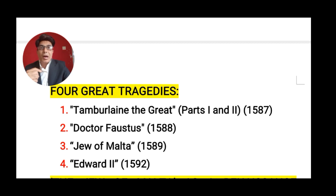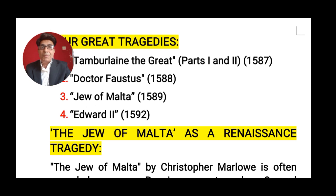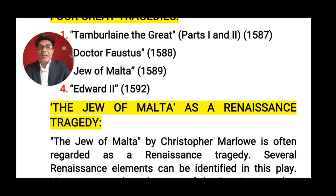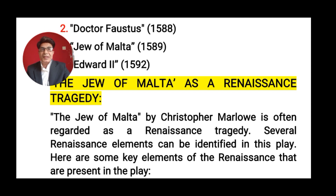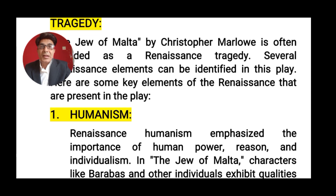The first question you should remember is: what are the four important tragedies written by Marlowe? These are: Tamburlaine the Great Part 1 and Part 2, published in 1587; Doctor Faustus, published in 1588; The Jew of Malta, published in 1589; and Edward the Second, published in 1592. We are particularly concerned with The Jew of Malta because we want to discuss this play as a Renaissance play.